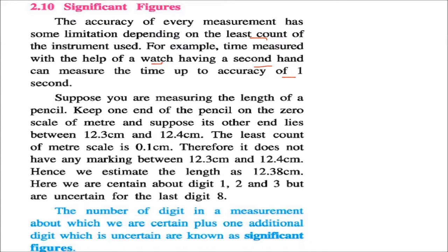Just assume that you are measuring the length of a pencil. Keep one end of the pencil on the zero scale of the meter. And suppose its other end lies between say 12.3 and 12.4. So the least count of a meter scale is 0.1 centimeter. It does not have any marking between 12.3 and 12.4, so we can estimate it to be 12.38.